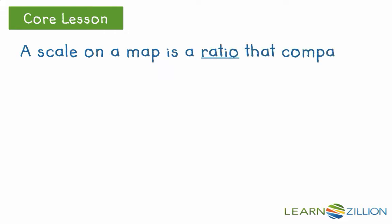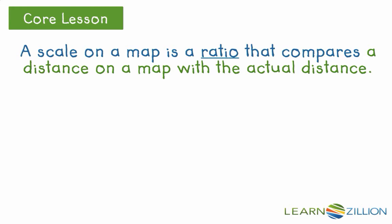A scale on a map is a ratio that compares the distance on a map with the actual distance. Here are some examples of map scales: 1 to 100,000 units of measure, 1 centimeter equals 1 kilometer, 1 to 100,000 units of measure. The distance on the map is always the first number in the ratio. Notice the units of measure on the scale of the map are not always the same as with scaled geometric shapes where the measurements are always the same.